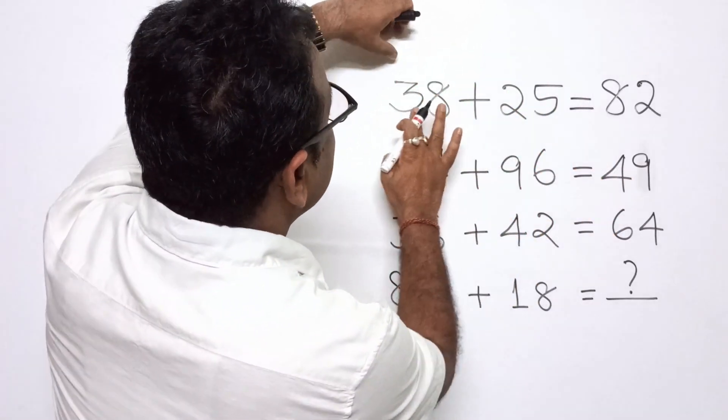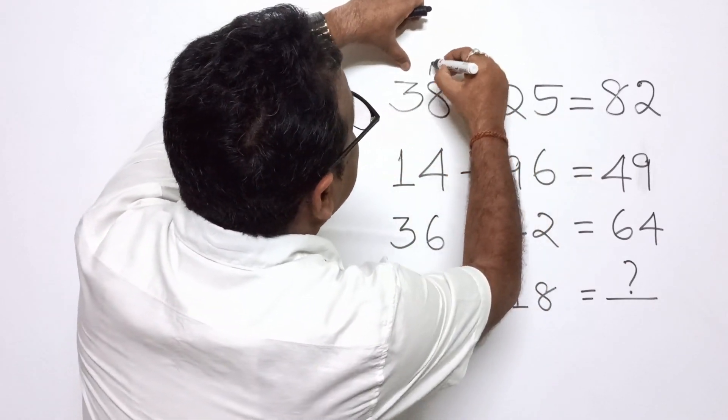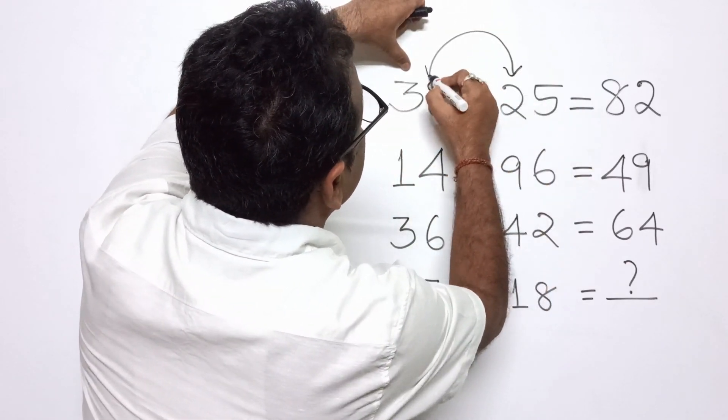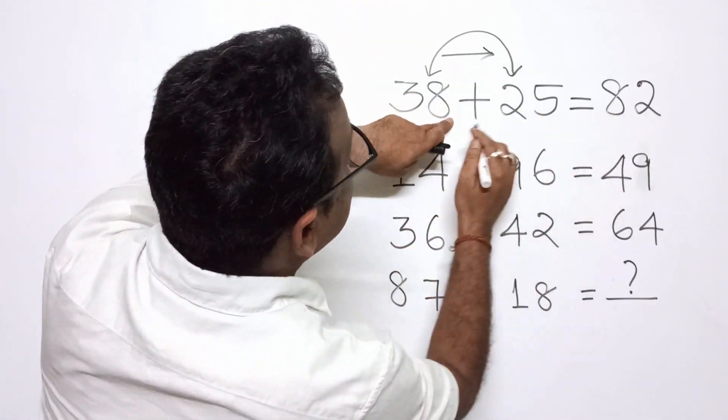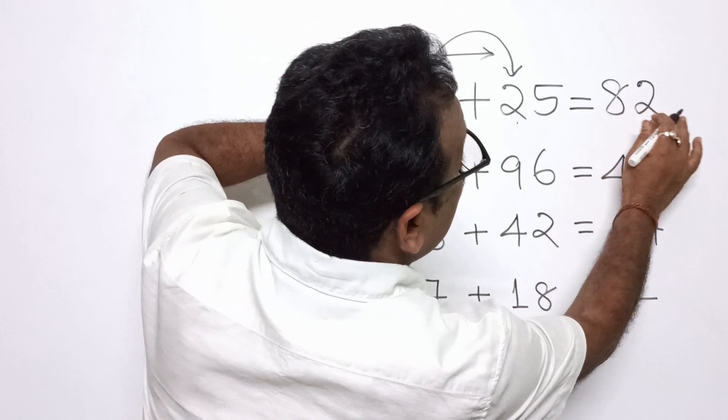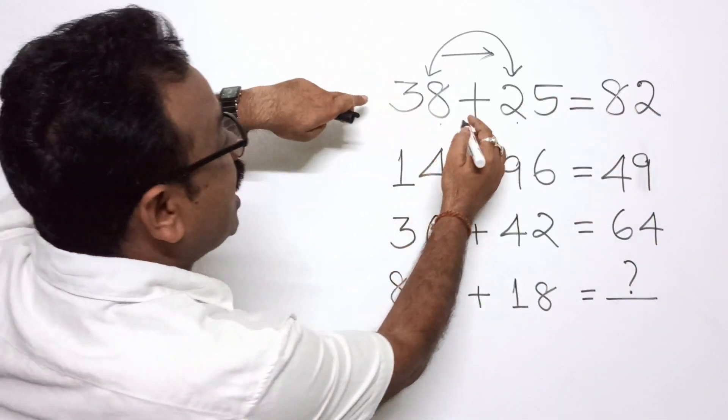So here see 38, 25. So we have taken 82 from left to right, 8 to middle one, this one. Suppose we have taken the pattern, so now 82.